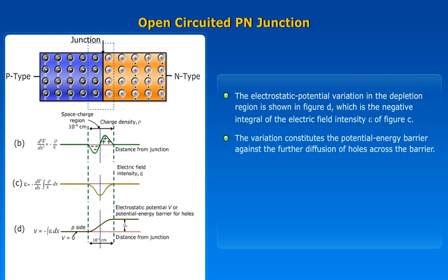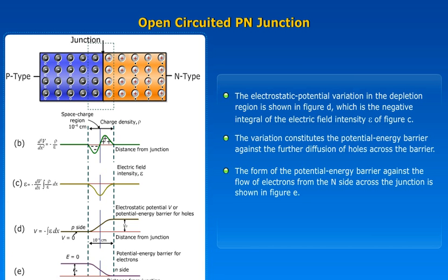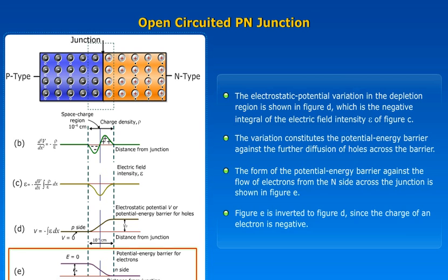The variation constitutes a potential energy barrier against further diffusion of holes across the barrier. The form of the potential energy barrier against the flow of electrons from the N-side across the junction is shown in figure E. Figure E is an inversion of figure D since the charge of an electron is negative.